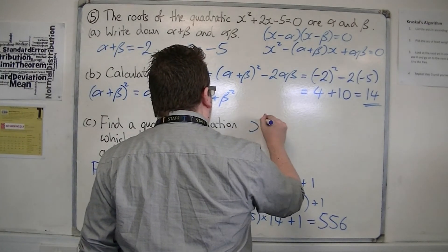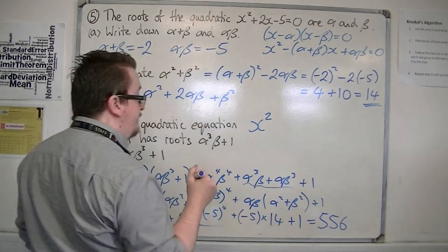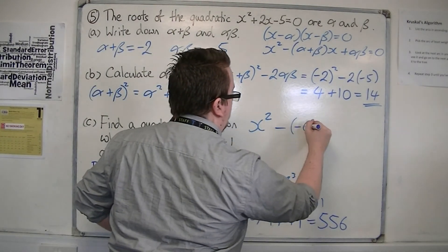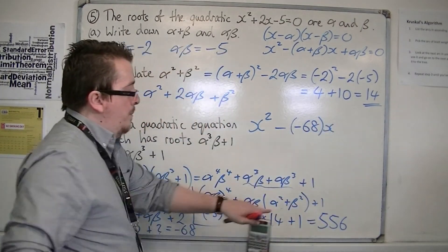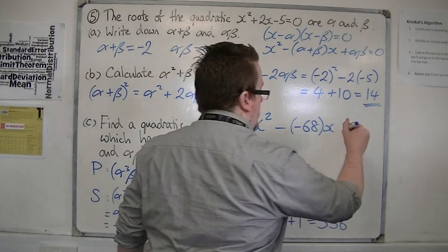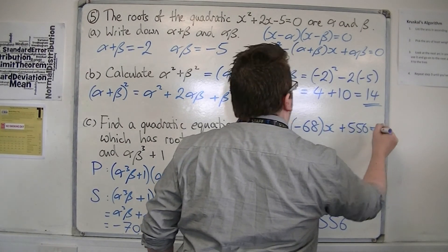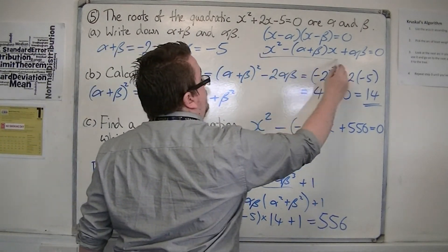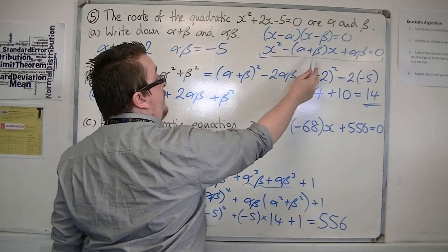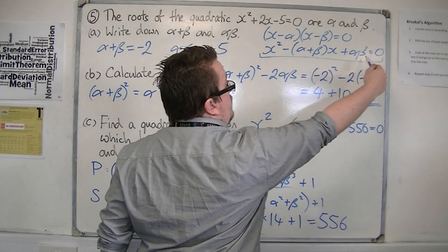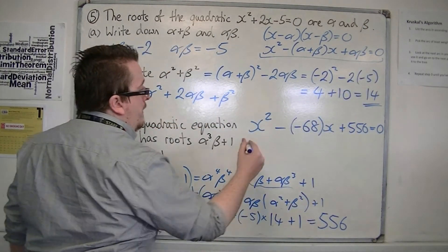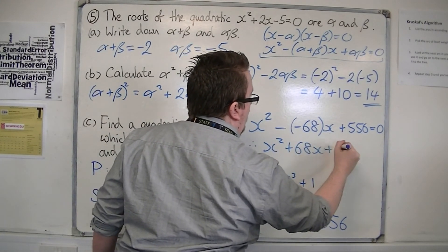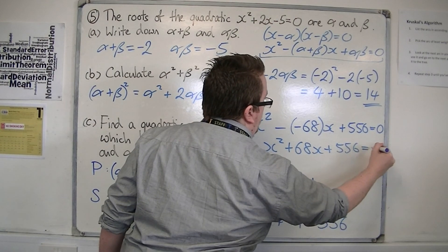The sum of the two roots is minus 68 and the product is 556. Following the same methodology, the quadratic is x squared minus (sum of roots)x plus (product of roots) equals 0. So x squared minus (minus 68)x plus 556 equals 0, which gives us x squared plus 68x plus 556 equals 0. That is the quadratic equation we're looking for.